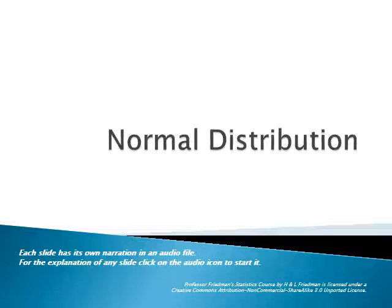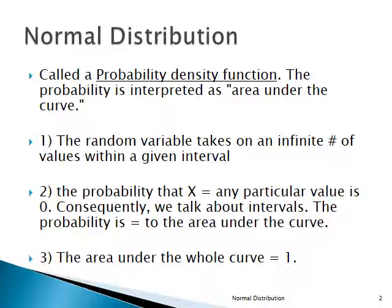Welcome to our lecture on the normal distribution. The normal distribution is a continuous probability distribution — a probability distribution for a continuous random variable. Those are called probability density functions. The probability distribution for a continuous random variable is called a probability density function.